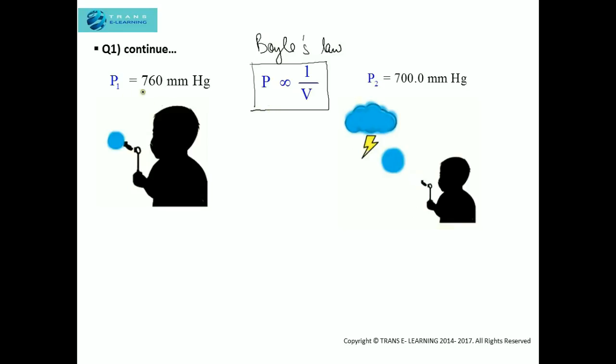So if we compare the volumes here, P₁ is more than P₂. So as per this inverse relation of Boyle's Law, V₁ should be less than V₂. So here V₁ was 50 mL. So whatever will be V₂, it will be more as compared to V₁. So the answer will be bigger.